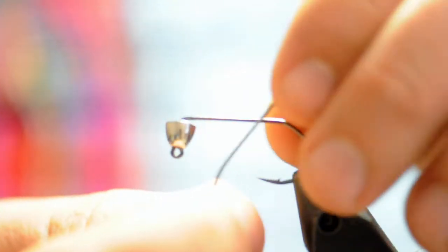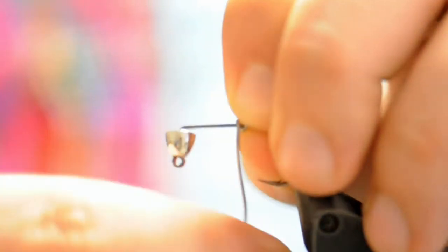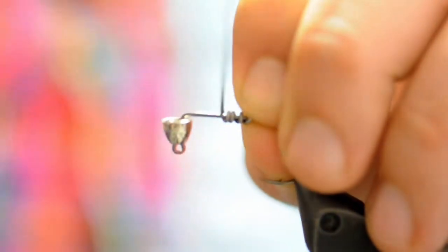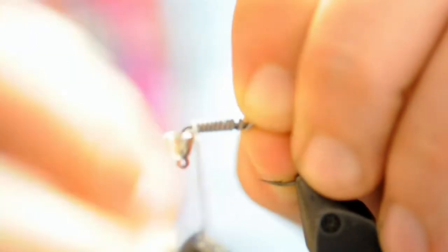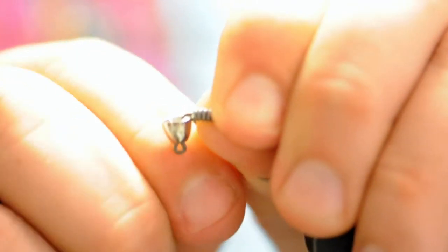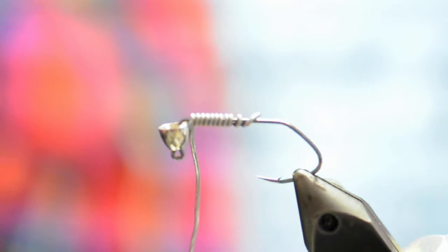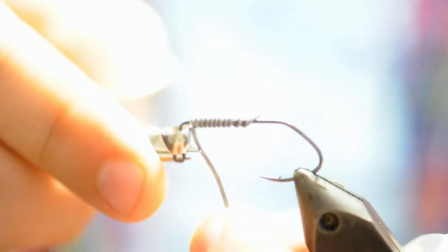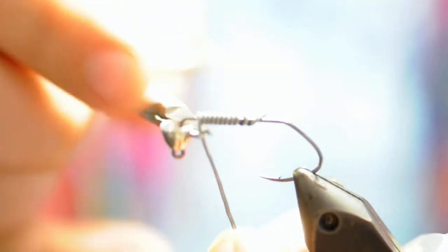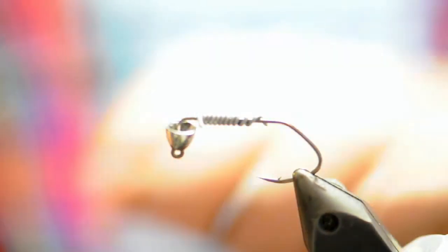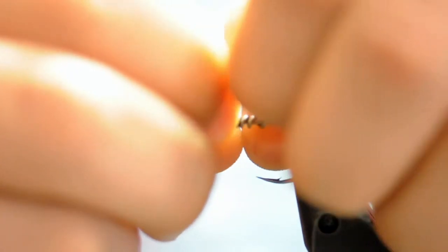The first thing we have to do is prepare our hooks. I do these in bulk and we'll begin by wrapping 10 wraps of .030 lead wire up the hook. That's a medium or 5 millimeter cone that's already on the hook. And now remember that if you're going to cut wire with scissors to have a dedicated pair for that purpose so you don't mess up your good scissors.